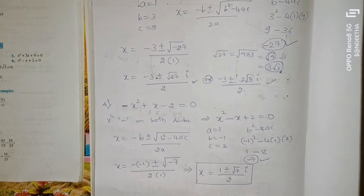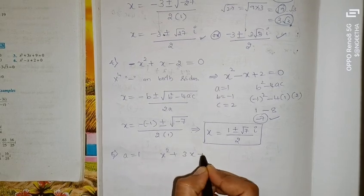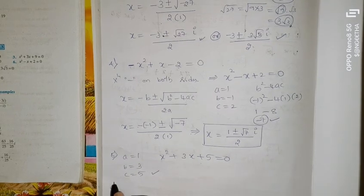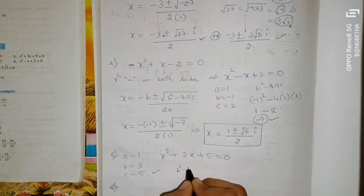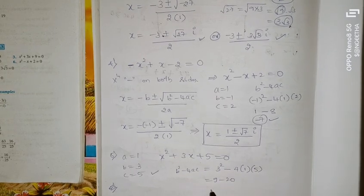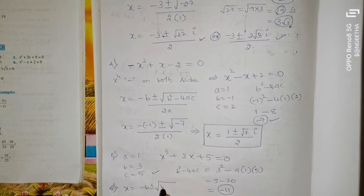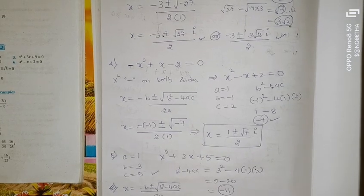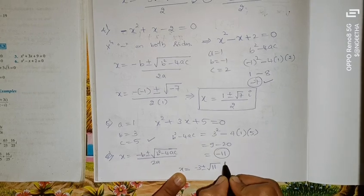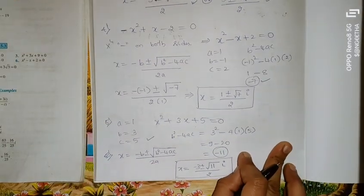Question 5: x² + 3x + 5 = 0. Here a = 1, b = 3, c = 5. So b² − 4ac = 9 − 20 = −11. Applying the formula: x = (−3 ± √11·i) / 2. That's your x value for question 5.